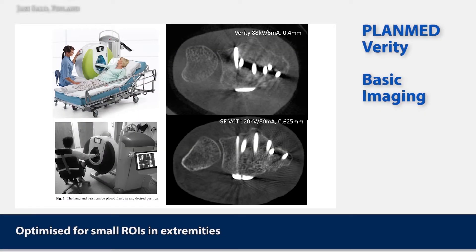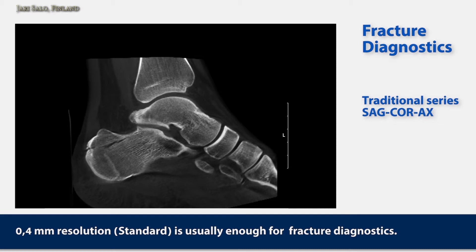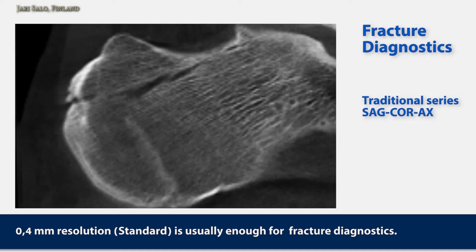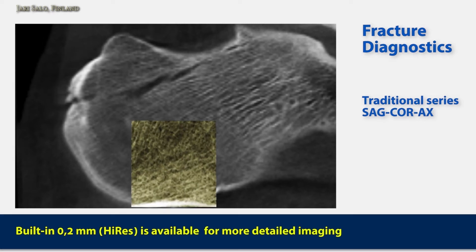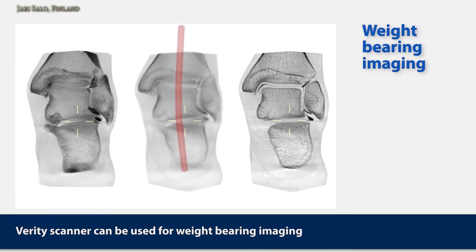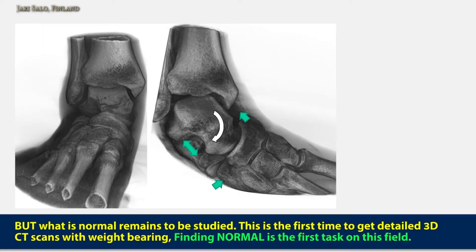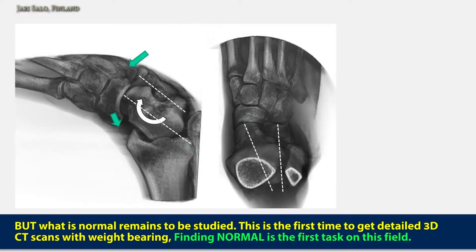The machine itself is a versatile, small machine which is ambulatory. You can have basic imaging with 0.4 millimeter resolution, which is an isotropic resolution — the same in all three directions. If you need more detailed imaging, there is a 0.2 millimeter built-in high-res option available. We can also have weight-bearing imaging — here's an example of alignment of the calcaneus and talus. We can also image special cases like a ballet dancer with an old sesamoid fracture and a painful non-union. We can stress the foot and ankle in other directions, but then we come to the problem of what is normal — for example, there is a huge movement of the Chopart area, but whether that is normal or not remains to be seen.